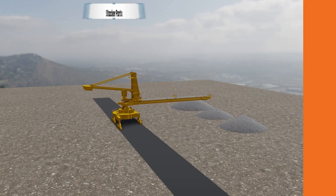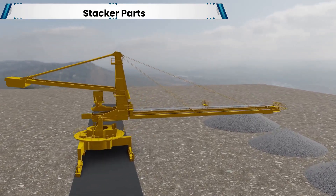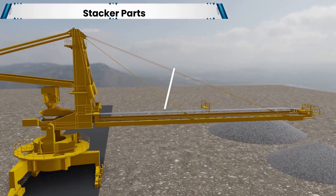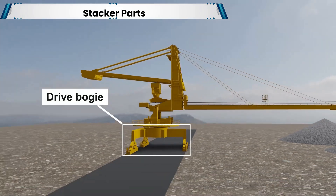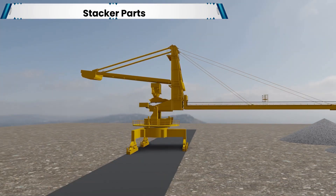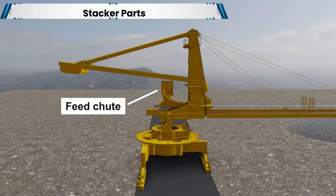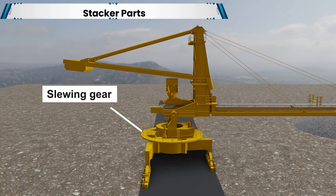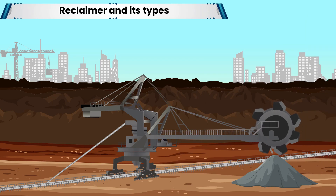The stacker comprises the following parts: main conveyor, boom conveyor, drive bogey, non-drive bogey, feed shoot, and slewing gear. A reclaimer is a large machine used in bulk material handling applications.